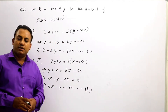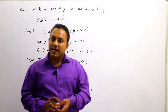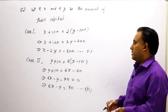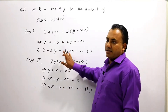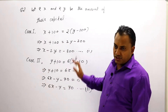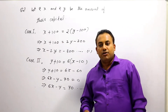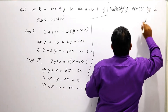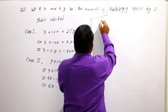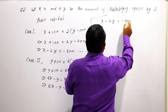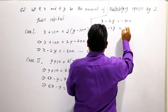We need to find x and y, so we will solve equation 1 and equation 2. You can choose whichever method you prefer — elimination, substitution, or cross multiplication. I think elimination will be easiest. To eliminate y, the coefficient of y in equation 1 is -2, and in equation 2 is -1. Multiply equation 2 by 2 to make them equal: 12x - 2y = 140.